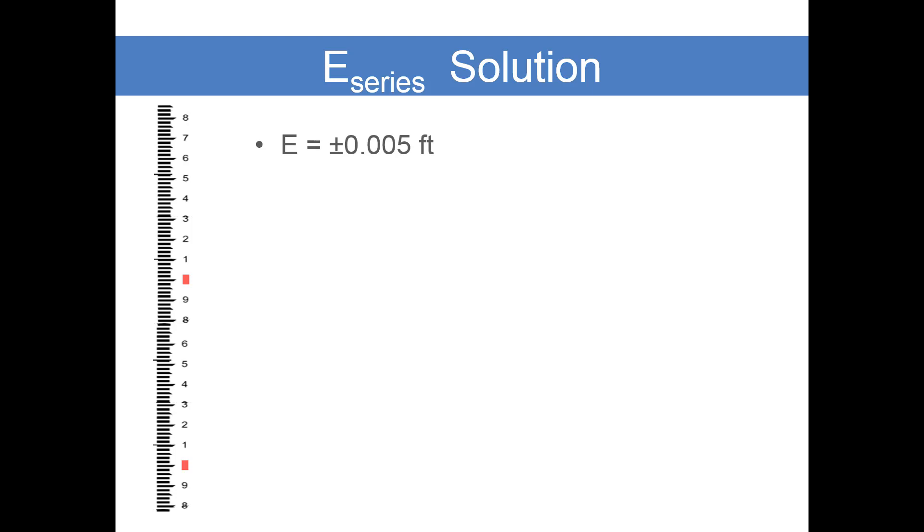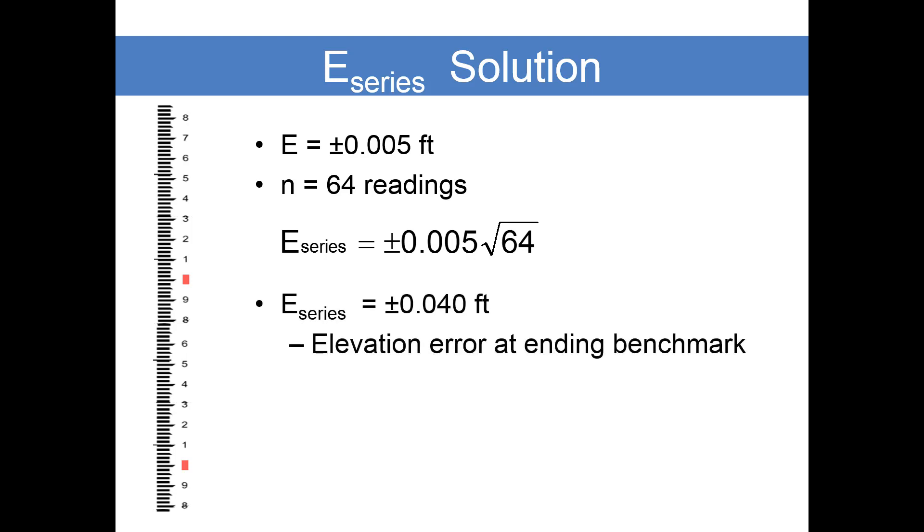We take that error of 0.005 and we apply it over 64 readings using the formula. The error is plus or minus 0.005, the square root of 64 readings. When we crunch the number, we find that's plus or minus 0.04 feet.